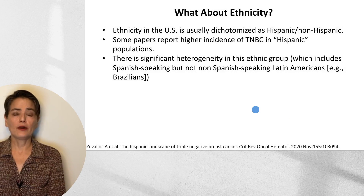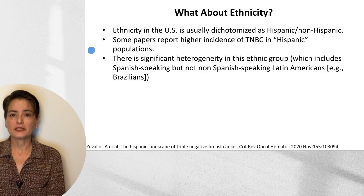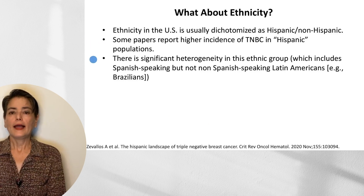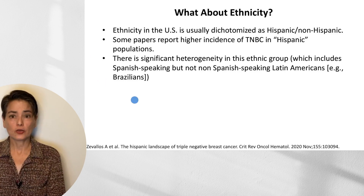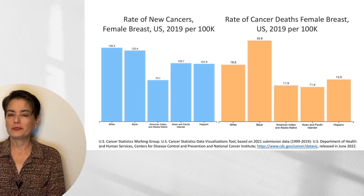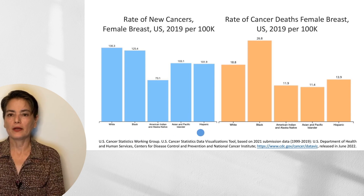What about ethnicity? For triple negative breast cancer, there appeared to be no significant difference in the group referred to as Hispanic. However, some papers do report a higher incidence of triple negative breast cancer in Hispanic populations. Ethnicity in the United States is usually dichotomized as Hispanic or non-Hispanic, and there is significant heterogeneity in this ethnic group because it is defined by language — Spanish speaking — so it includes individuals from Spain but not Latin Americans from Brazil, who speak Portuguese.